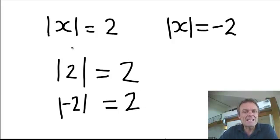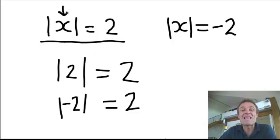So can you see from this above, this x, it can be 2 or it can be negative 2. So when I absolute it, it produces a 2.